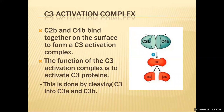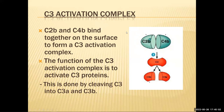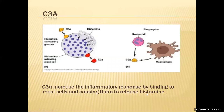Continuing the pathway, we reach C2b — part of the C3 activation complex — whose function is to activate C3 protein. Proteolytic cleavage occurs, producing C3a and C3b. C3a, when formed, is associated with an increase in the inflammatory response, binding to mast cells and causing them to release histamine.